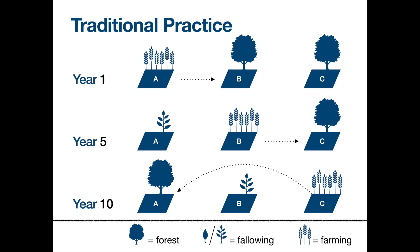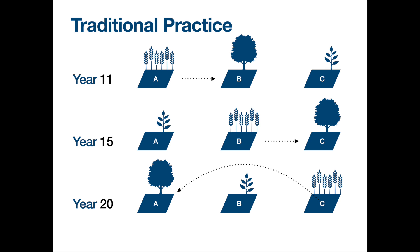Eventually, after several years in plot C, they return to plot A. If it's about five years from A to B and five years from B to C, that's ten years later when they return to plot A. By then, the soil nutrients would have recovered — the soil is fertile again — so they start growing and slash and burn again, and the whole process repeats.